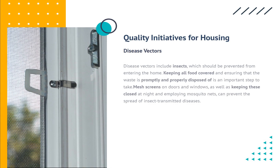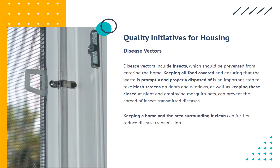Disease vectors. Disease vectors include insects, which should be prevented from entering the home. Keeping all food covered and ensuring that waste is promptly and properly disposed of is an important step to take. Mesh screens on doors and windows, as well as keeping these closed at night and employing mosquito nets, can prevent the spread of insect-transmitted diseases. Keeping a home and the area surrounding it clean can further reduce disease transmission.